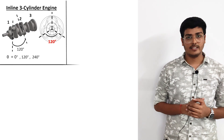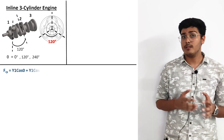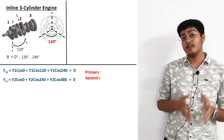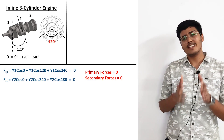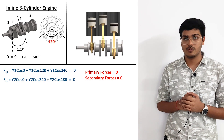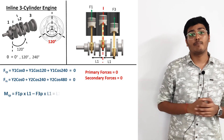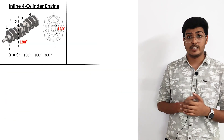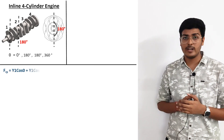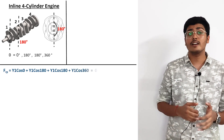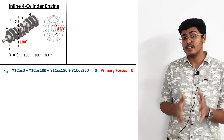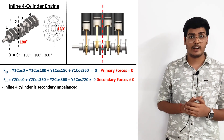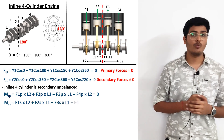For the inline three, the primary force = y₁·cos 0° + y₁·cos 120° + y₁·cos 240° = 0, and similarly the secondary forces also equal 0. However, we must also consider moments. Taking moments about the center line, both the primary moment and secondary moment are not equal to zero, meaning the inline three is unbalanced and it wobbles front to back. For the inline four, the primary force = y₁·cos 0° + y₁·cos 180° + y₁·cos 180° + y₁·cos 360° = 0. However, the secondary forces are not equal to zero, so the inline four is secondarily imbalanced. Taking moments about the center line, both primary and secondary moments equal zero for the inline four.